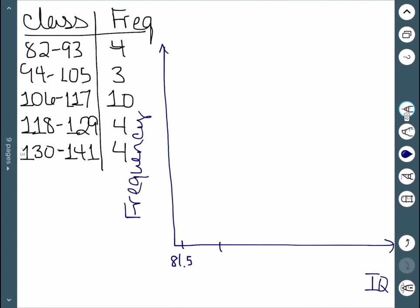From 93 to 94 gives us 93.5. We then have 105.5, 117.5, 129.5, and our final boundary is 141.5.